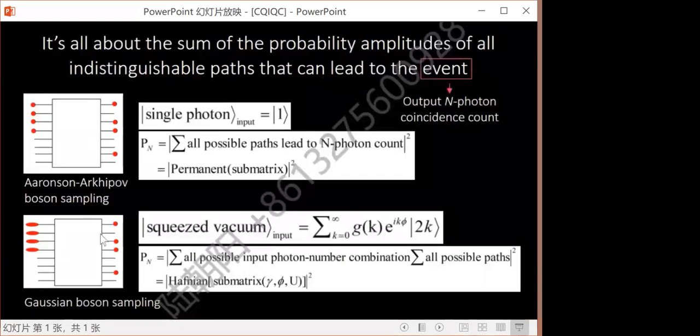What GBS brings in on top of the different path superpositions, is that there's also different input photon number combinations. For example, if we detect four photons in output, it can come from different paths, but also it can come from combinations of different photon numbers. For example, the first one have four photons equal to two, the second one is zero, zero, zero, or, two, two, zero, zero, or two, zero, zero, two. There's also photon number superpositions. This is the way I find it convenient to explain GBS for discrete variable people. For continuous variable people, they have more solid understandings.